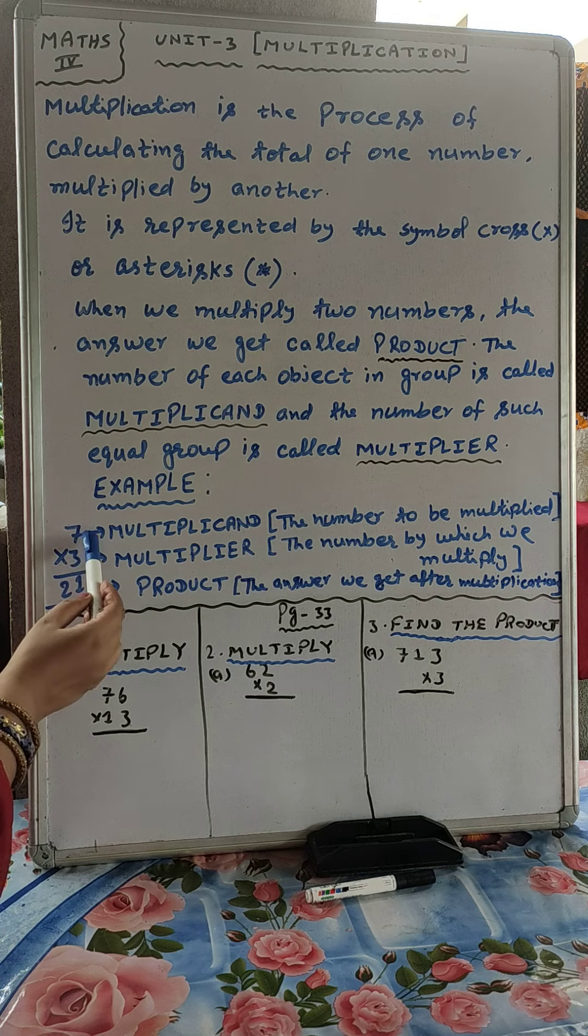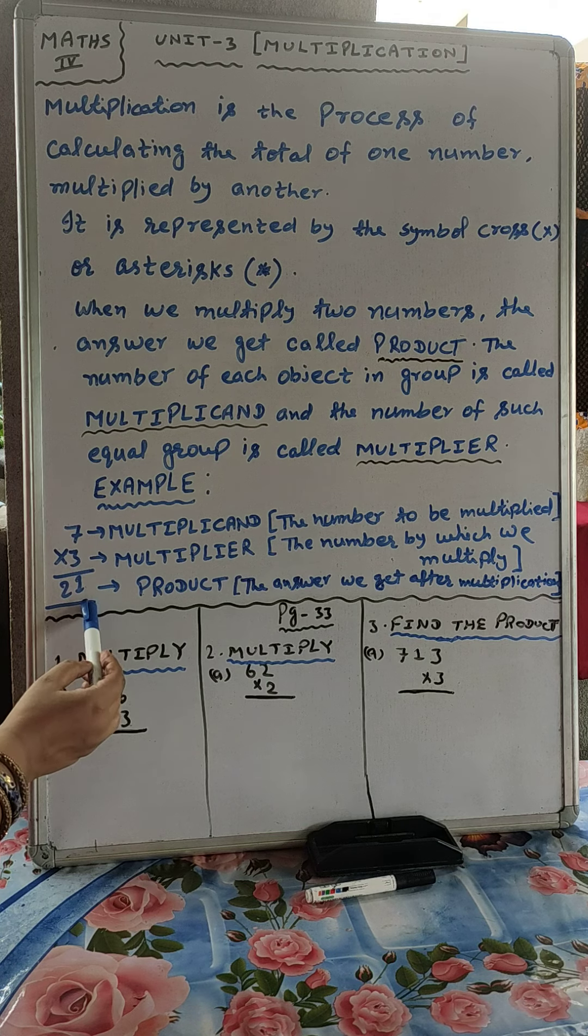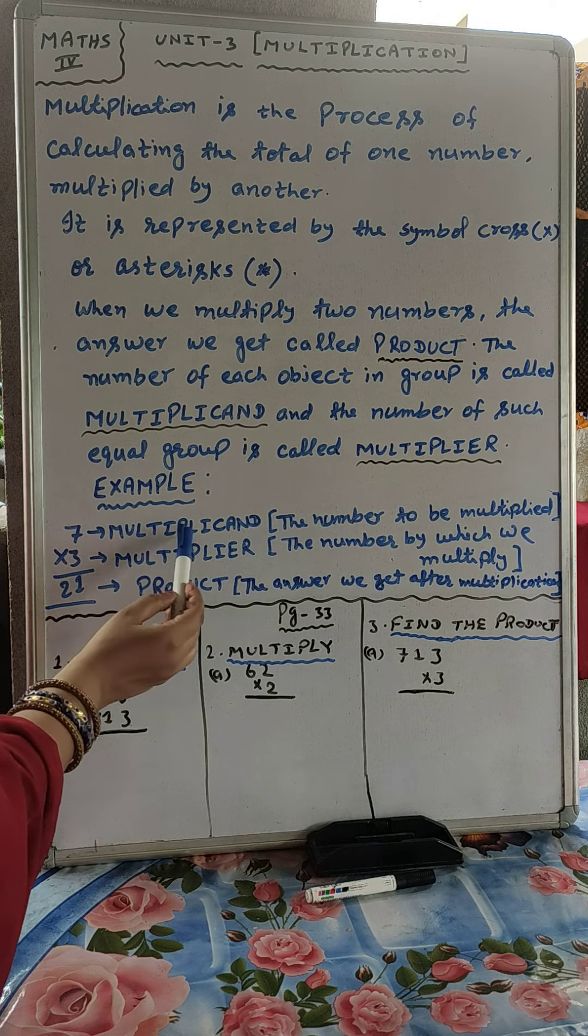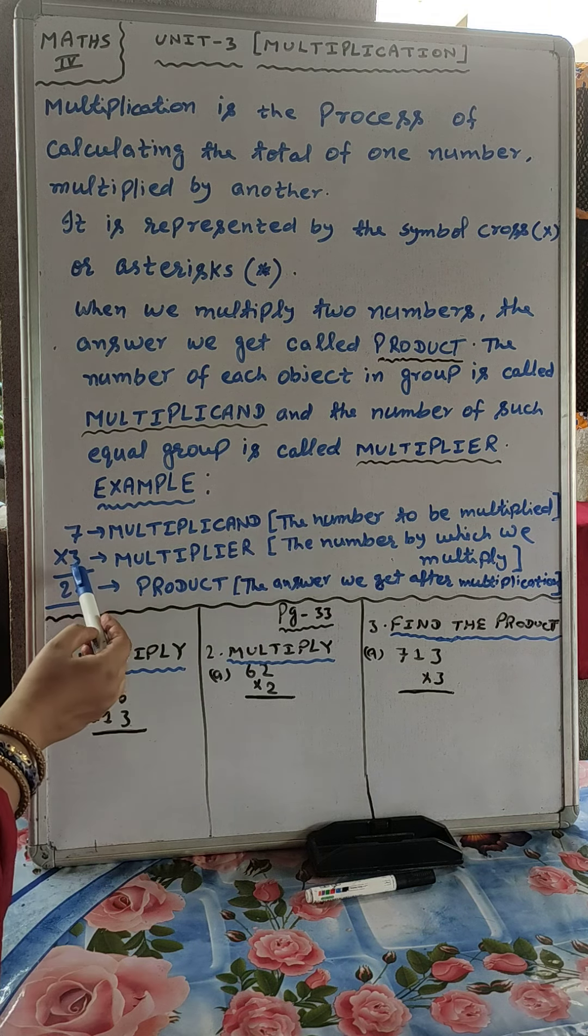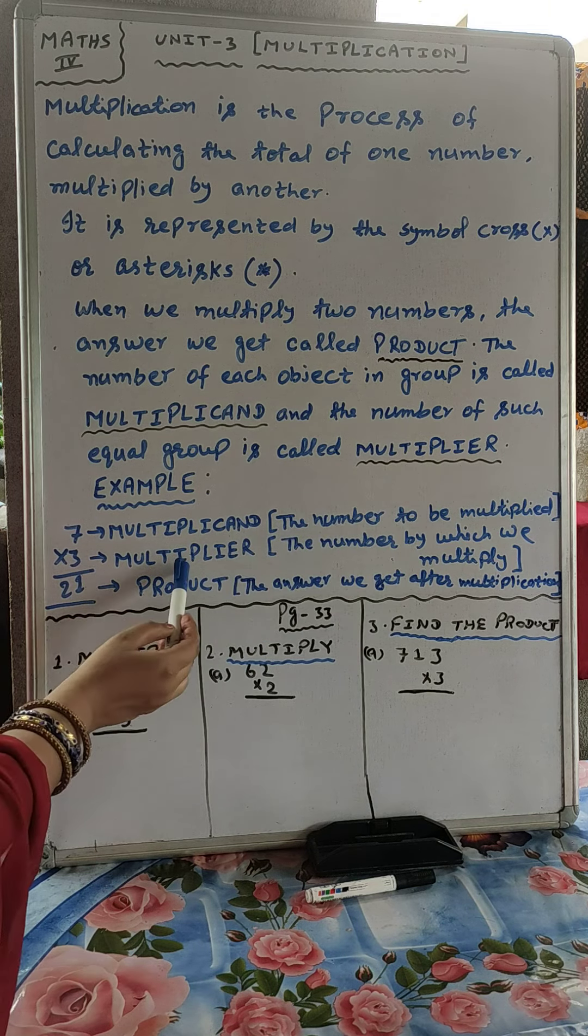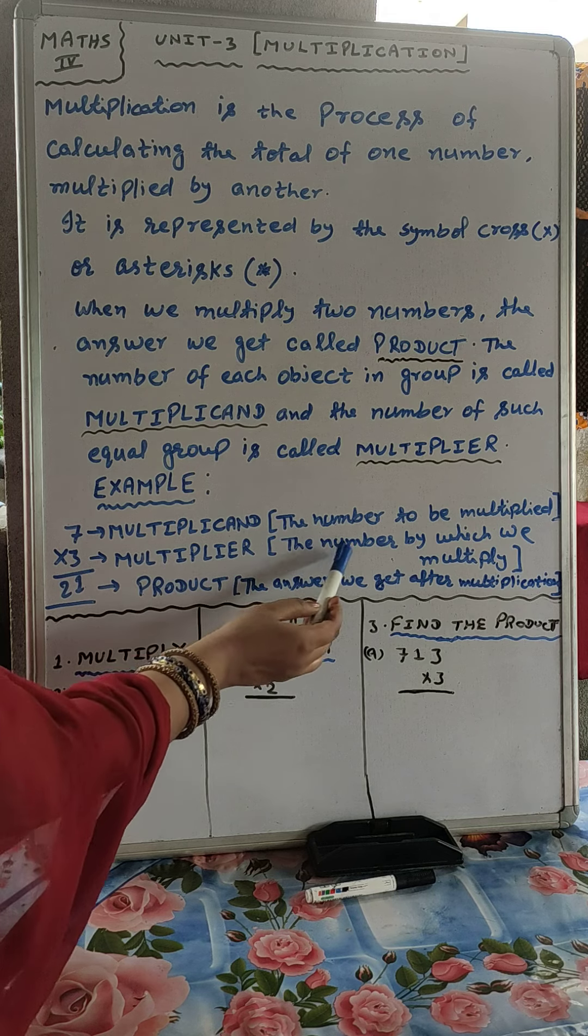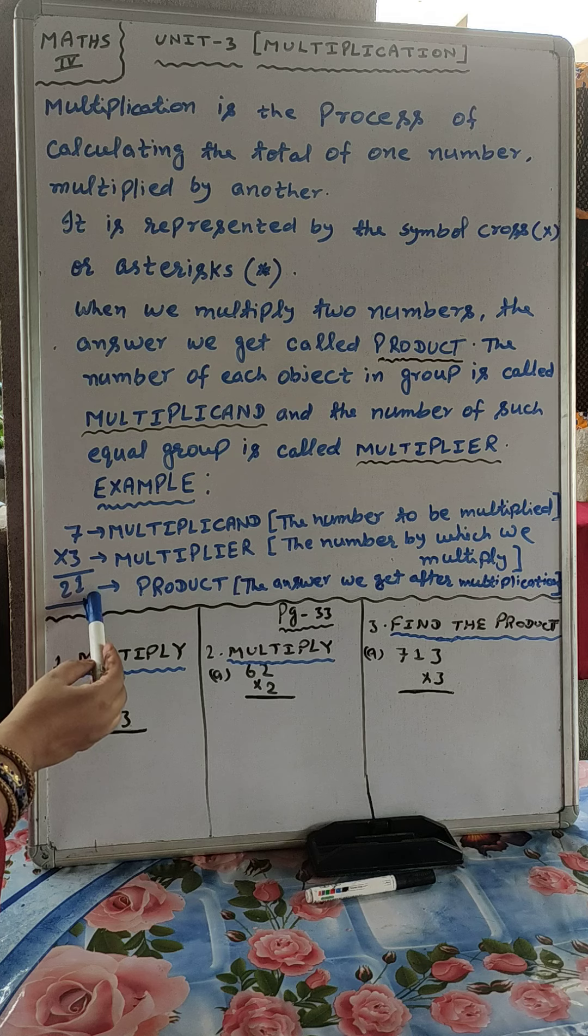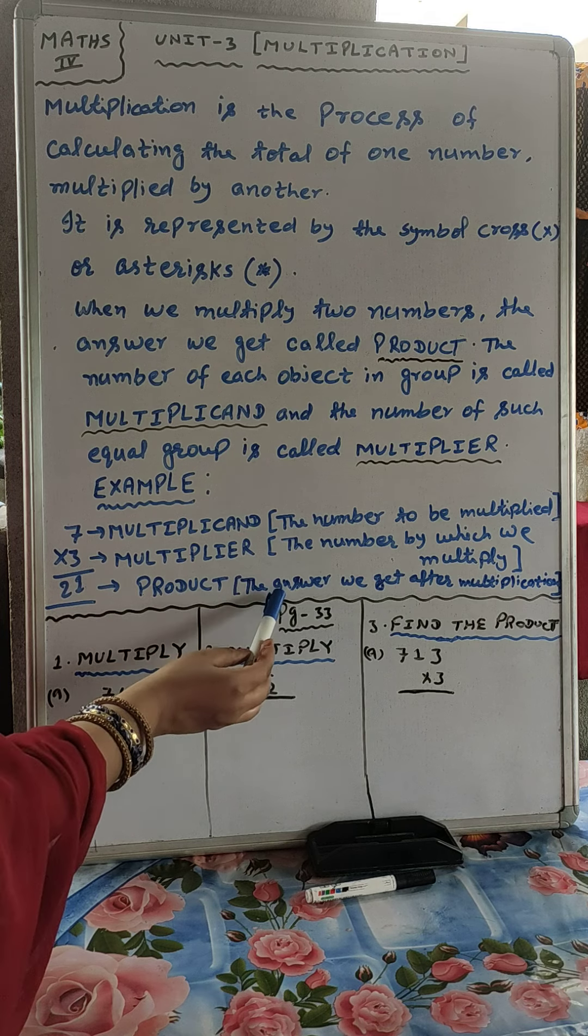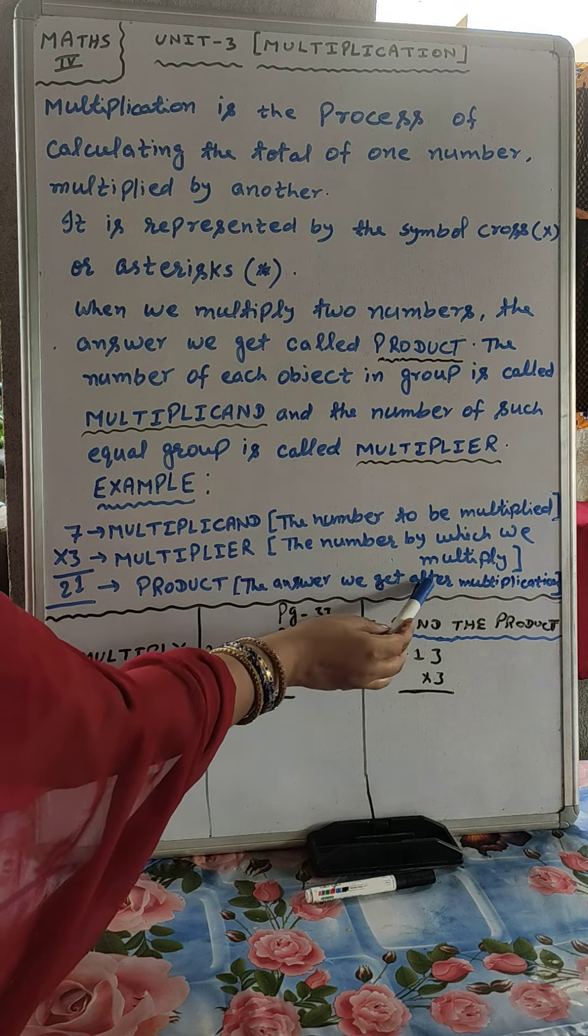For example, 7×3=21. Here, 7 is the multiplicand, the number to be multiplied. 3 is the multiplier, the number by which we multiply. And 21 is the product, the answer we get after multiplication.